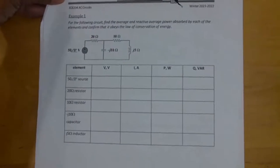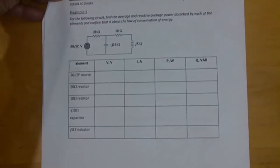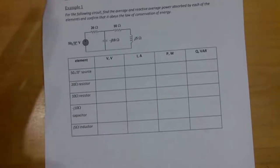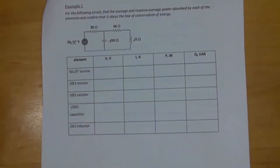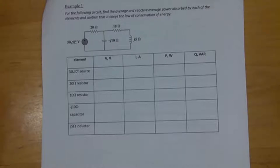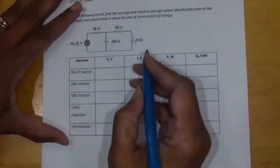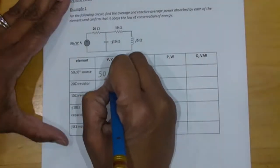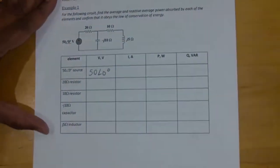We have a circuit here, and we want to show that the circuit obeys the law of conservation of energy. What that means is we need to find every voltage, every current, and determine what's delivering power and what's absorbing power. The source is the only thing that can deliver power. The resistors absorb real power — average power — and inductors and capacitors basically charge and discharge, so the power just trades back and forth. For the voltage source, the voltage is simply 50 angle zero degrees.